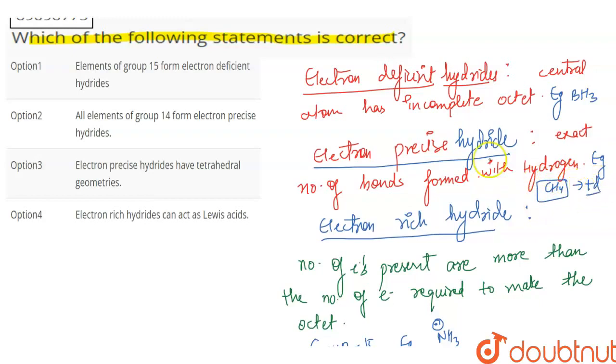Here is the answer. Electron 15 are electron-rich, so this is false. Group 14 are electron-precise, so this is true and tetrahedral also. And electron-rich hydrides act as Lewis acids, so this is false. Electron-rich hydrides like ammonia are Lewis bases.